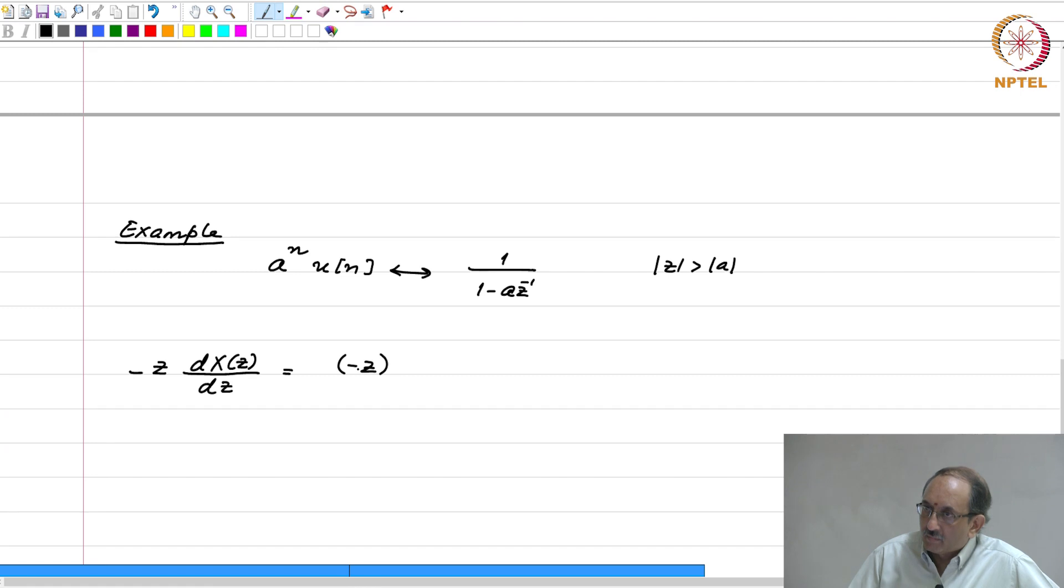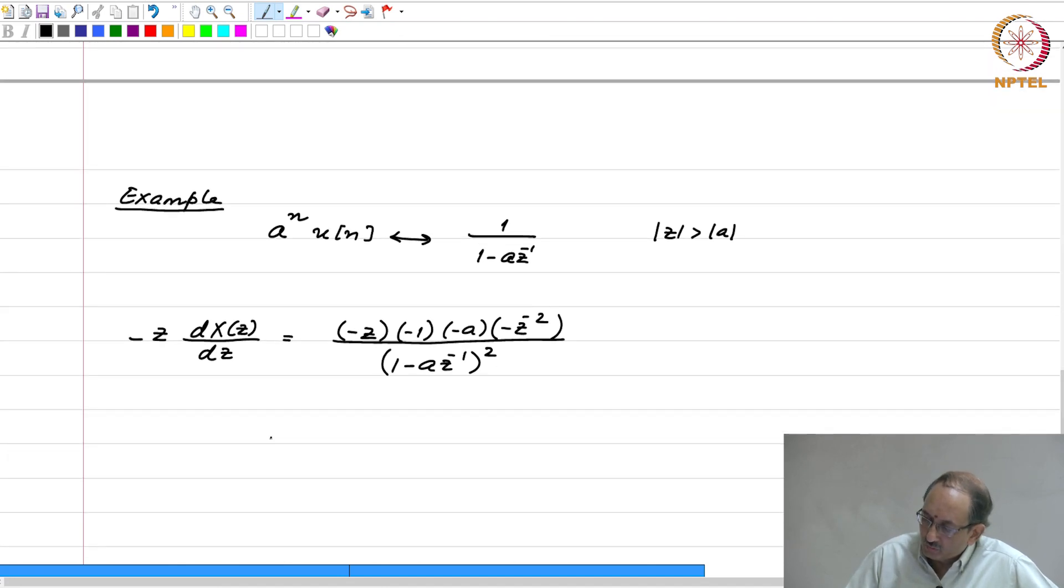So, this is minus z. So, you need to differentiate this. So, this has minus 1, 1 by a z inverse power minus 2. So, that becomes this. Then you need to differentiate this and this becomes minus z power minus 2. All I have done is just simple differentiation. Therefore, this now becomes a z inverse by 1 minus a z inverse whole squared.